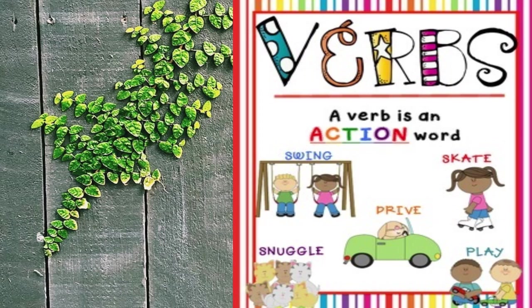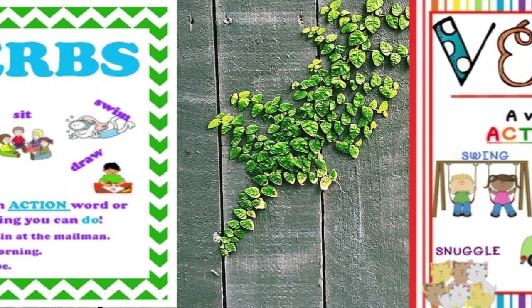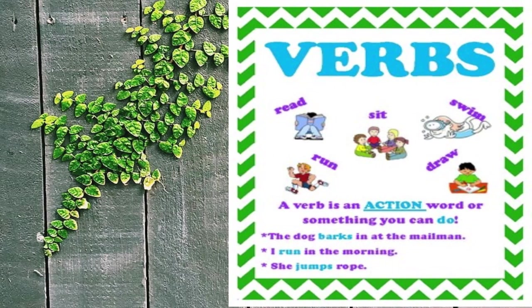Swing, snuggle, drive, skate, play. Let's look at some sentences. The dog barks at the mailman. I run in the morning. She jumps rope. Read, run, sit, draw, swim, barks, run, jumps — are all verbs. They are words that show action, meaning something is being done.